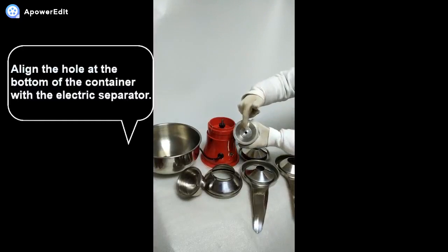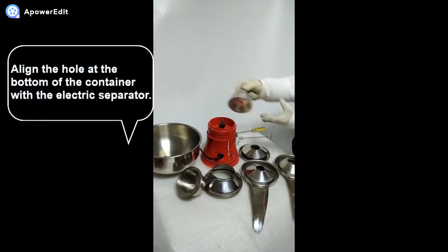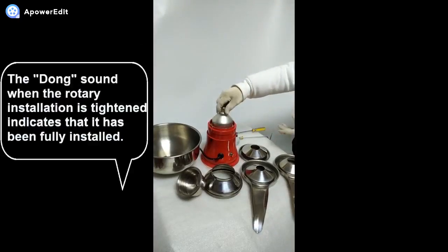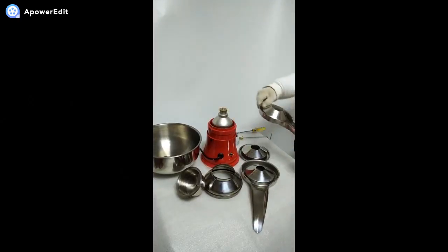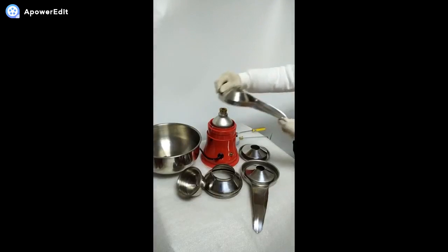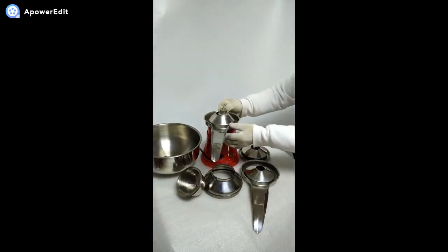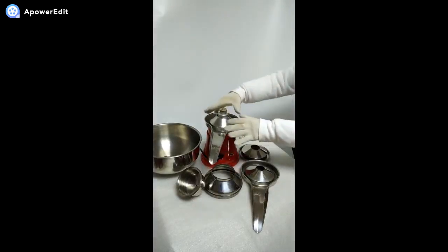Prepare all parts of the product and align the hole at the bottom of the container with the electric separator. The 'dong' sound when the rotary installation is tightened indicates that it has been fully installed.